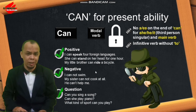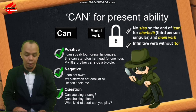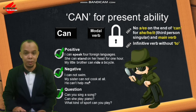Untuk kalimat negatif, kita cukup menambahkan 'not' setelah 'can': 'I cannot speak' / 'My sister cannot cook at all.' Kalau kita singkat, 'cannot' bisa dibaca 'can't' — dalam British English maupun American English.